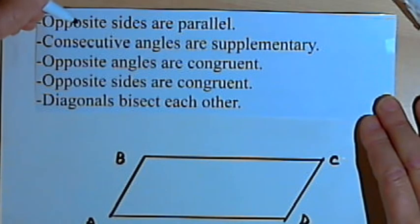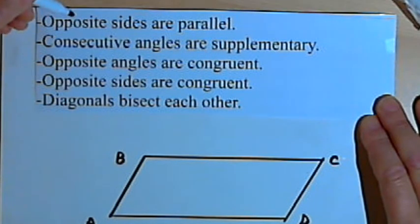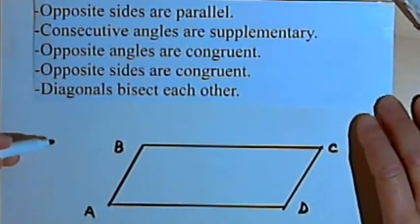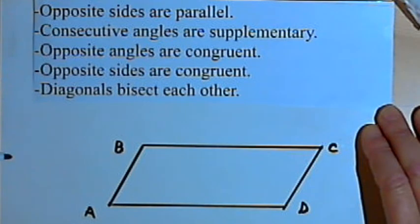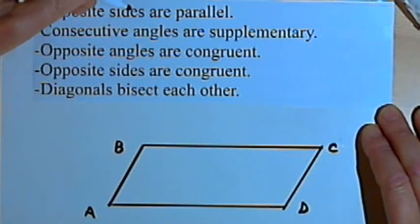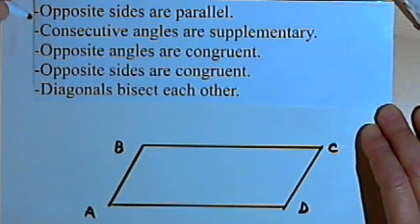The opposite sides of a parallelogram are parallel. Since the definition of a parallelogram is a four-sided figure that has its opposite sides parallel, this property is just part of the definition — it's given by the definition.